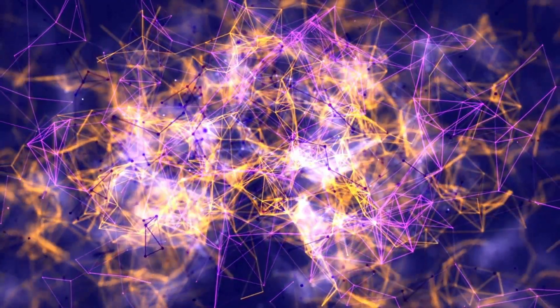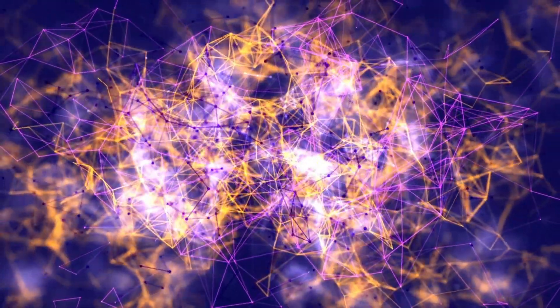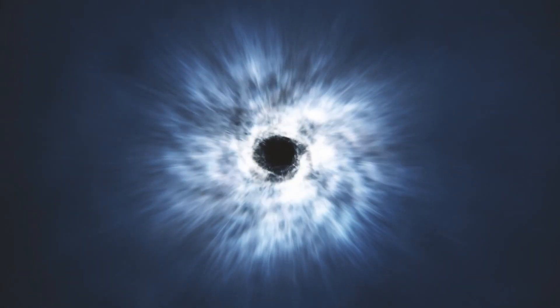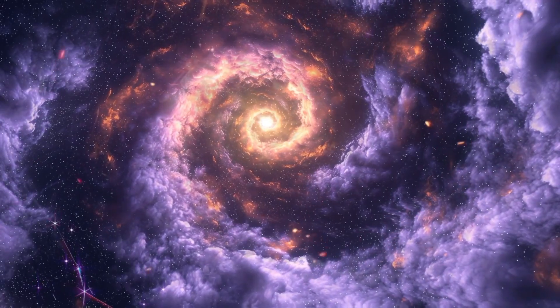Then comes the climax when iron starts forming at the core. Unlike lighter elements, iron doesn't release energy when fused, so the energy produced isn't enough to resist the star's own crushing gravity. The star balloons in size and creates an implosion, followed by a massive rebound effect, resulting in the explosive force of a supernova.